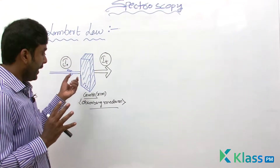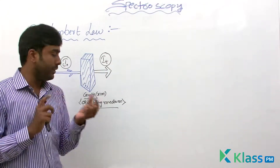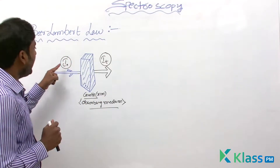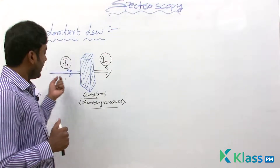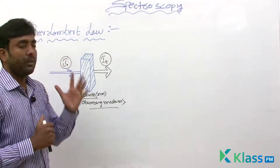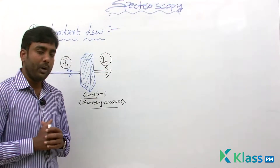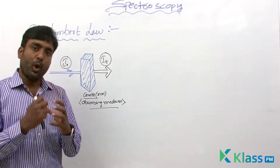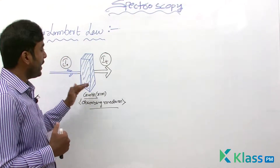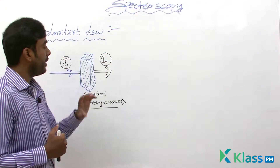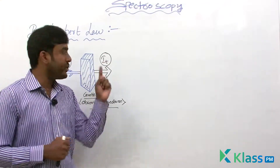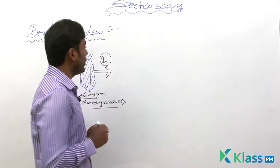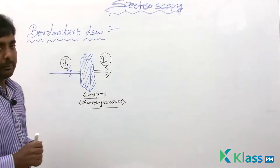There is a sample in the cuvette whose width is x centimeters. Radiation with I0 intensity passes through the absorbing medium; some of the radiation is absorbed by the sample and the remaining radiation transmitted through the sample has intensity IT. Now with this, we will try to define what is Beer's Law.